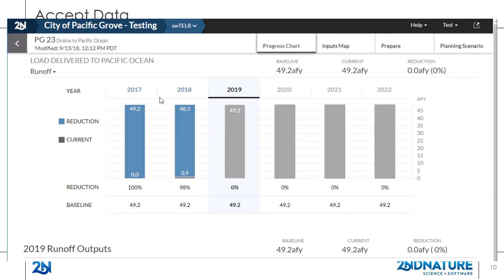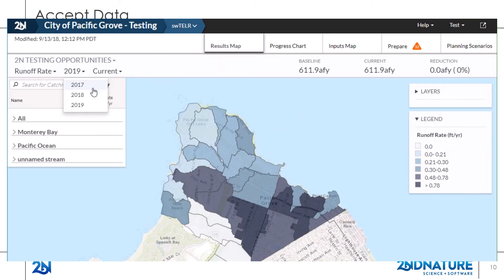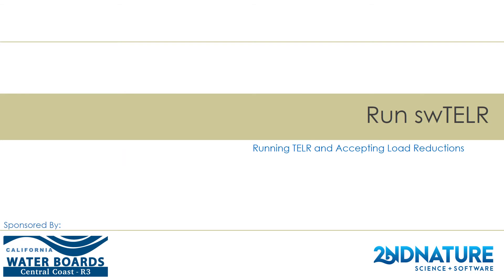Once data is accepted, the progress bar chart turns blue and the next prepare year is added to the chart and loaded into the Prepare tab. This completes all the steps to run Teller and accept load reductions. This video series is made possible through funding from the Central Coast Regional Water Quality Control Board. For comments or questions, please contact Second Nature or use the feedback form available from the user drop-down in all 2Inform tools. Thank you for watching.